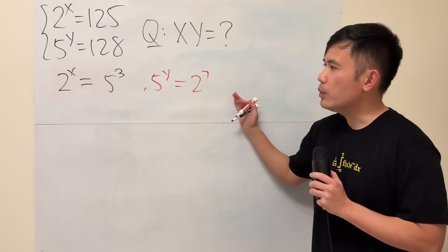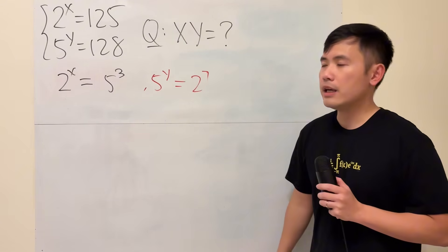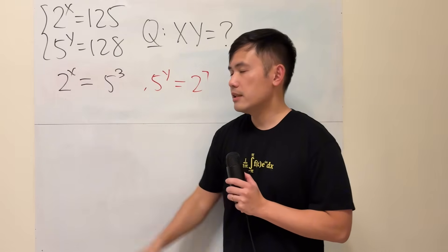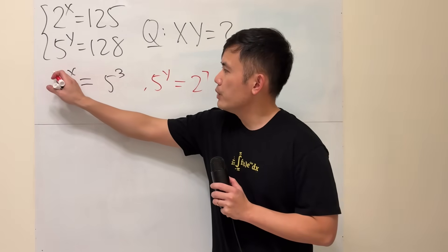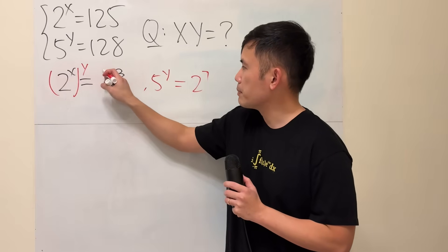Now, the question is, how can we produce x times y? Here, we have x in the exponent already. The key is, we can raise both sides to the y's power.